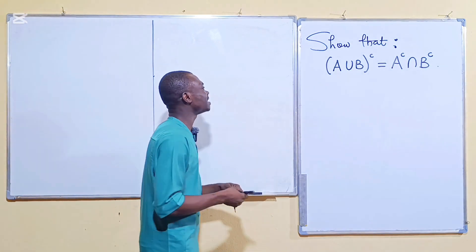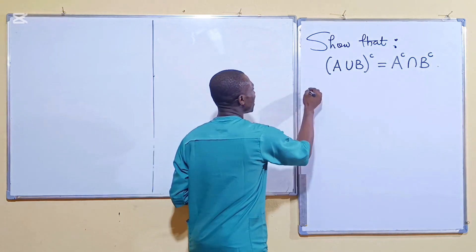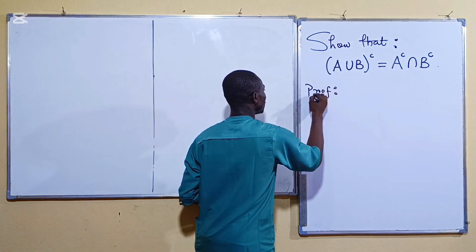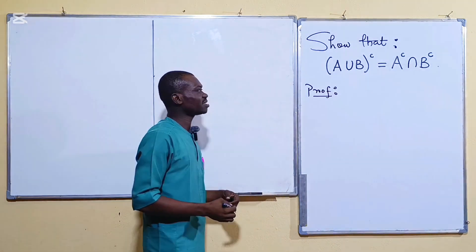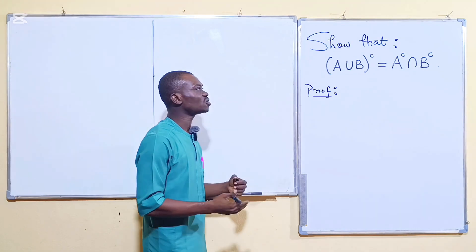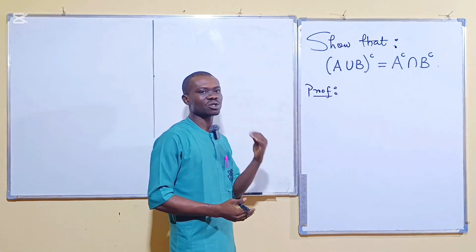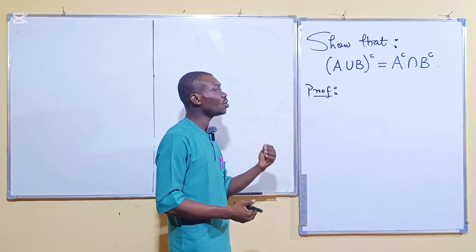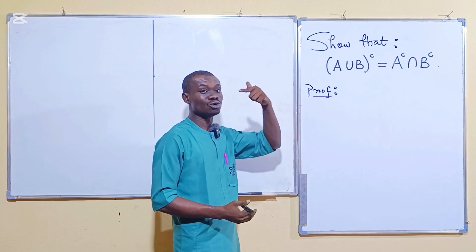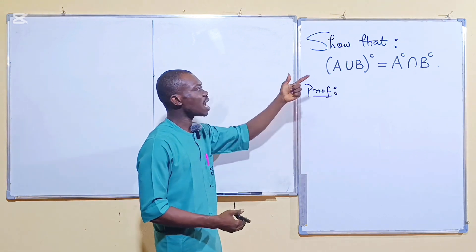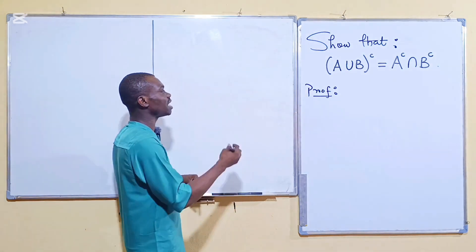All right, so how do we go about it? Let's prove. Permit me to start from here. Now the first thing to show whenever you talk about equality of sets is that you must understand the requirement. So you must know what is required for you to do in order to prove what you're expected to prove. So how do we show equality of sets?